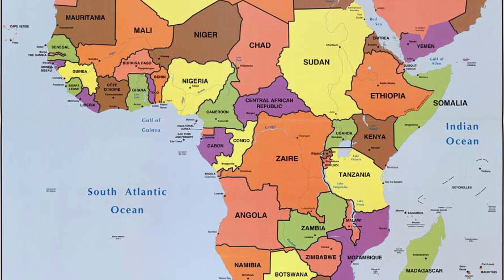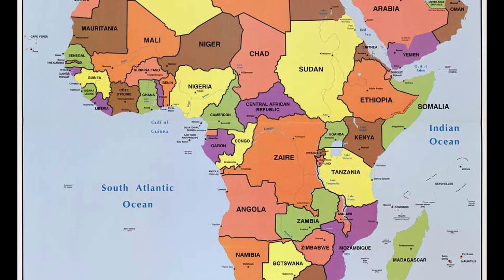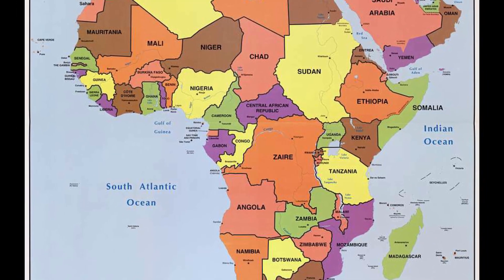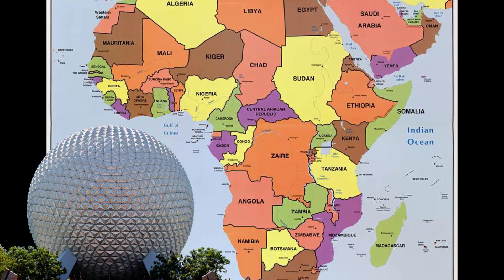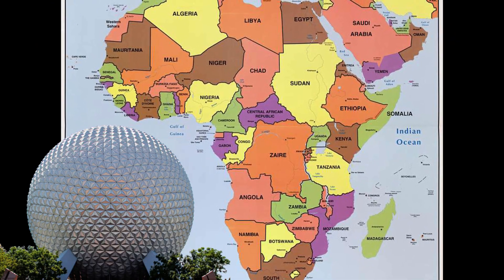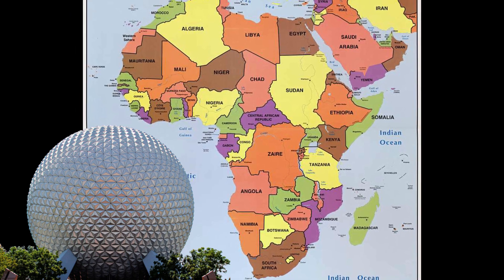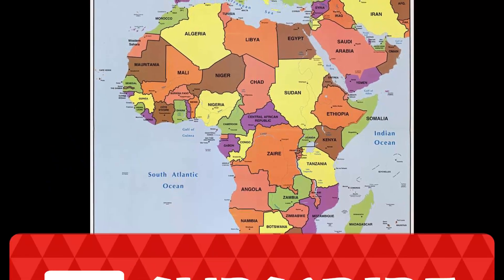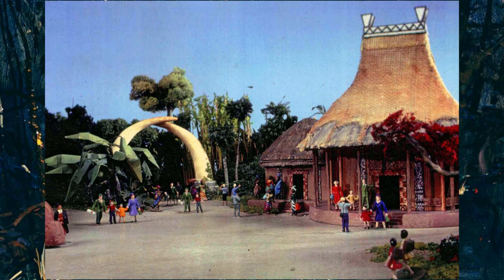Nigeria is currently the seventh most populated country on Earth, so it makes sense to choose Nigeria. I would also like to see other African countries in Epcot as well — but that's a future discussion. Today I'd like to focus on this lost African piece of Epcot's history. For those who are new here, click that subscribe button.